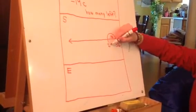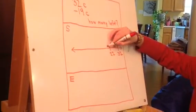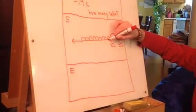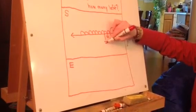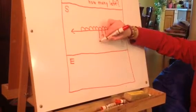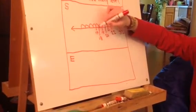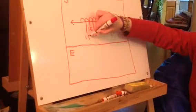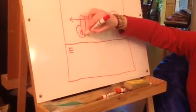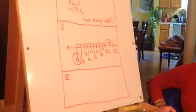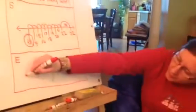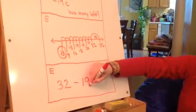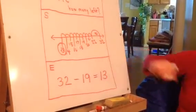10 less than 32 is 22, and then I'm going to have to go back 9: 1, 2, 3, 4, 5, 6, 7, 8, 9. This would be 21, 20, 19, 18, 17, 16, 15, 14, 13. So the Dynamos have 13 cupcakes left. I started with 32, so I'm going to start my equation with 32. I'm going to say 32 take away 19, which is what I did, leaves me with 13 cupcakes.